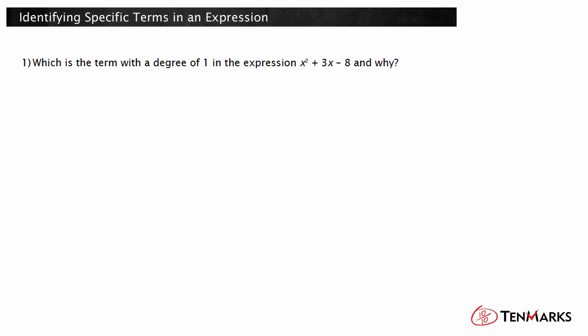Which is the term with a degree of 1 in this expression? The degree of a term is the sum of the exponents of all its variables, so the term with a degree of 1 is 3x. It is 3x because the variable x has an implied exponent of 1.